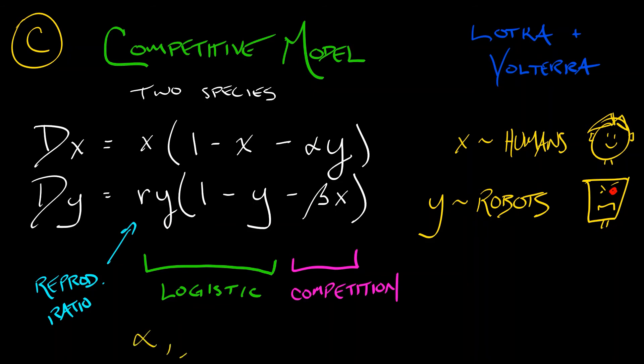Just to repeat, alpha, beta, R, these are all positive constants. X and Y are the two population sizes we also need for those to be non-negative as well.